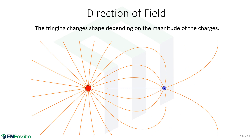If we make one of those charges larger than the other — say a positive 10 coulombs and a negative 1 coulomb — we still have the same picture of the fringing. It's still diverging from the positive charge and converging on the negative charge; it's just that the shape of those lines would change a little bit. Remember, the density of those lines also corresponds to the magnitude of the field, so it makes sense that the highest density would be around the largest charge.